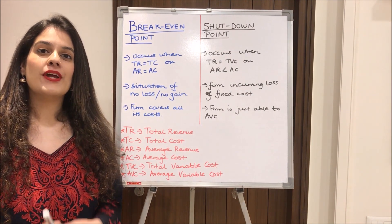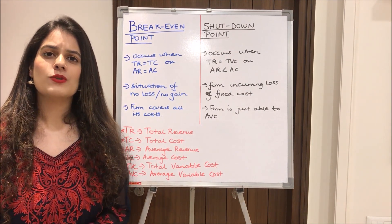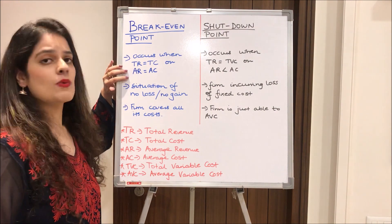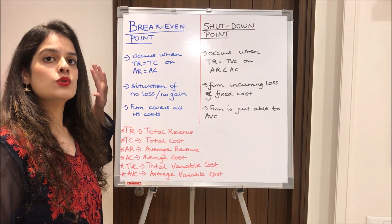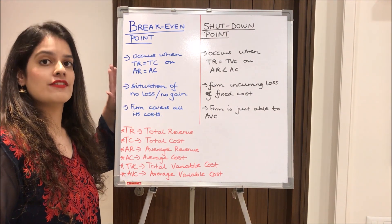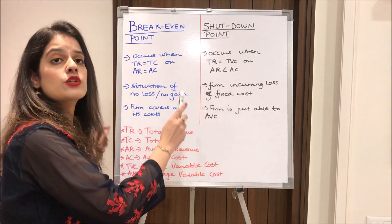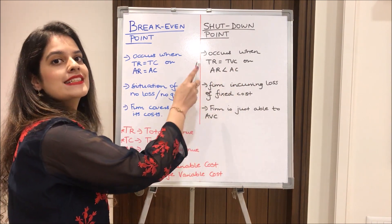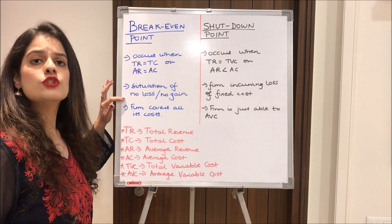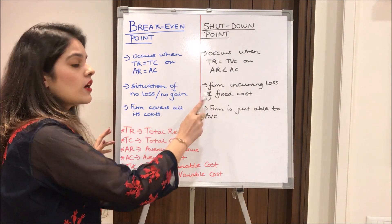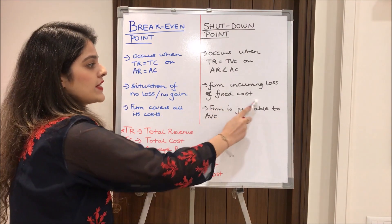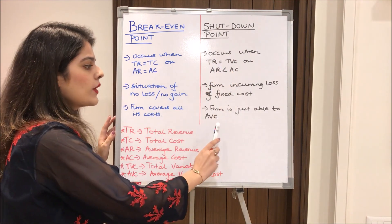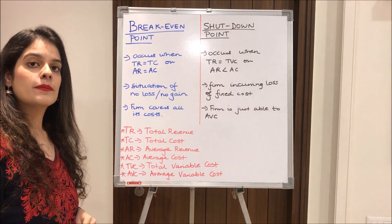Lastly, I'll talk about the break-even point and the shutdown point, terms used under the cost and markets chapter. The break-even point occurs when total revenue equals total cost and average revenue equals average cost. The shutdown point occurs when total revenue equals total variable cost and average cost exceeds average revenue. At the break-even point, the firm experiences no loss and no gain and is able to cover all costs. At the shutdown point, the firm incurs a loss on fixed costs and is only able to cover its average variable cost.